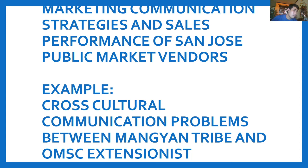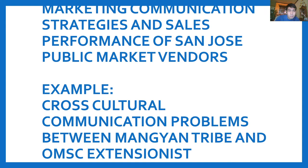Yung title sa taas, the problem there is the marketing — the public market vendors are being displaced by supermarkets nowadays. So we're going to figure out their marketing communication strategies in order to determine the effect of these communication strategies on their sales performance. That is topic number one. This is topic number two. So, gagawa din kayo ng sarili nyong topic. So, unang-una, how to make a topic or title, research title, is to find out a certain problem.